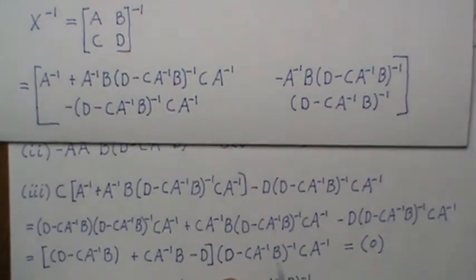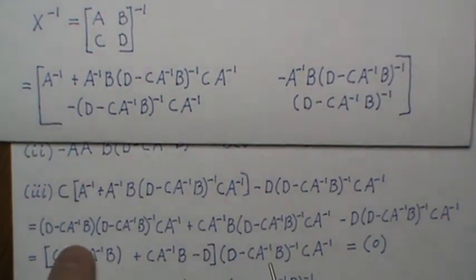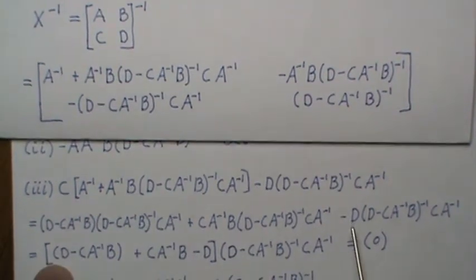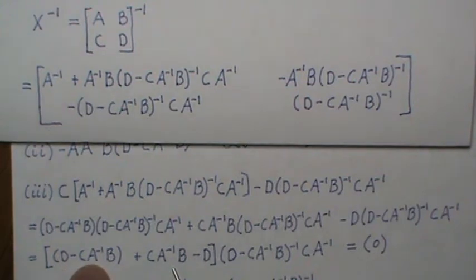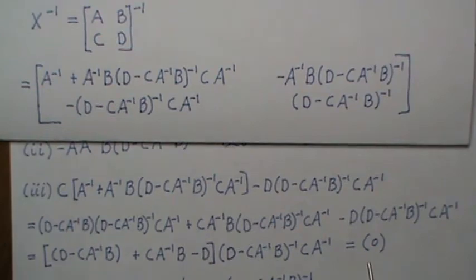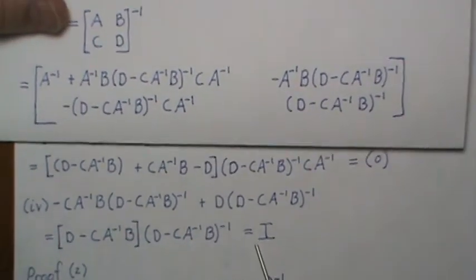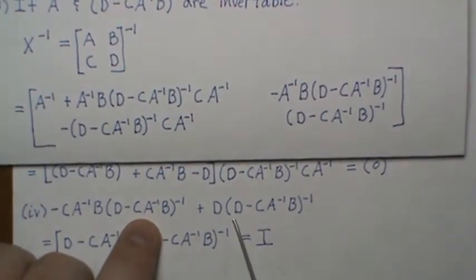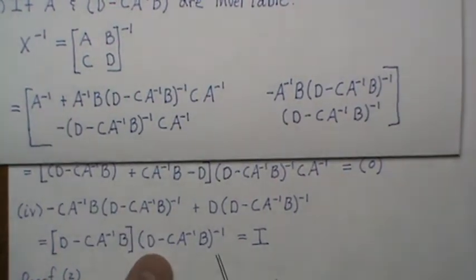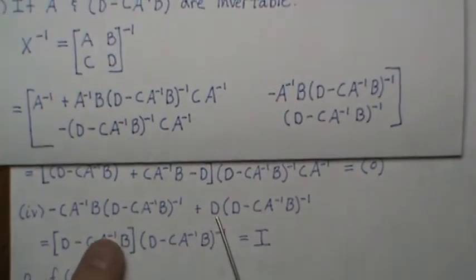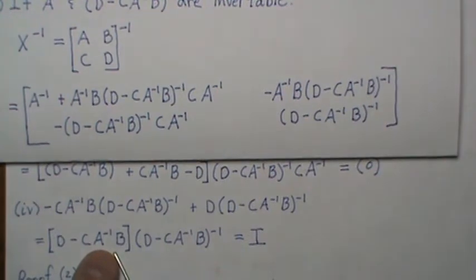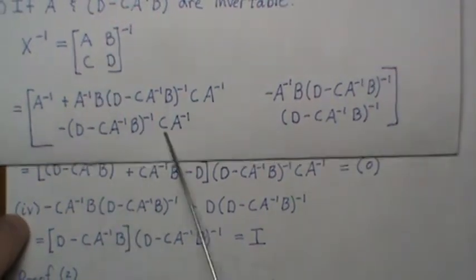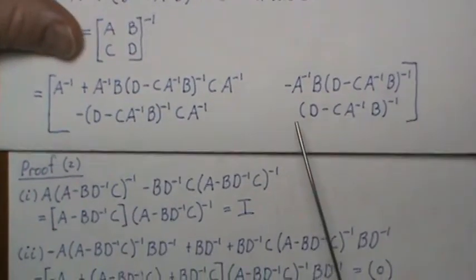We right-factor out this piece, and what's left includes C A-inverse B and D. We have D minus D, and C A-inverse B minus C A-inverse B, so this is the zero matrix — times that gives zero. For the fourth entry, we take [C D] times the second column, right-factor out (D minus C A-inverse B), and we have that matrix times its inverse, which is the identity. So this is the identity matrix, completing the proof of the first result.